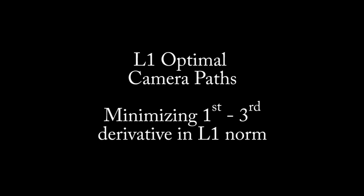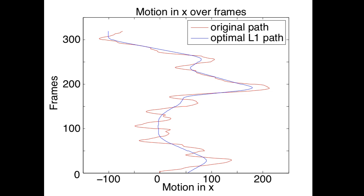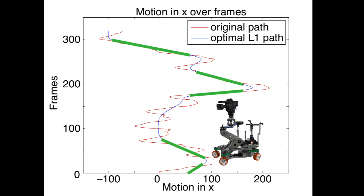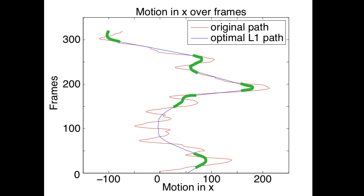Using L1 minimization of the first through third derivatives, the optimized camera path shown in blue is only composed of constant, linear, and parabolic segments, conveying a viewing experience modeled after tripods, dollies, and transitions using ease in and out.